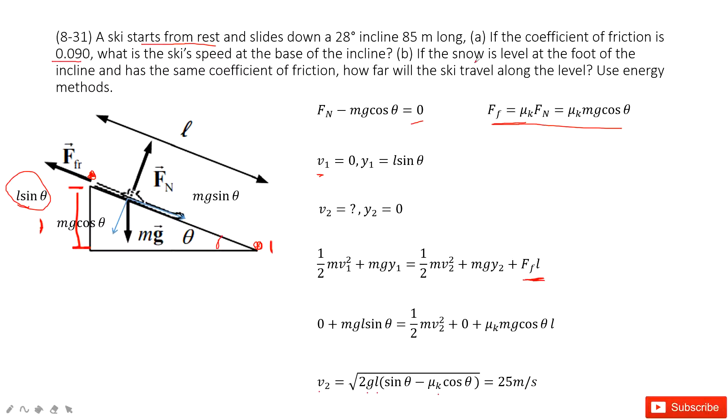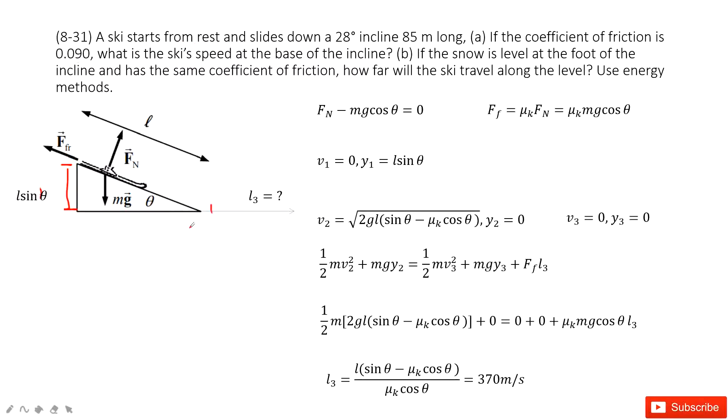The next one asks you: if the slope is level at the foot of this slope and has the same coefficient of friction, how far will this person travel along the level? We consider this is V2. This person keeps moving on the horizontal.